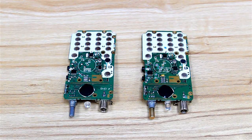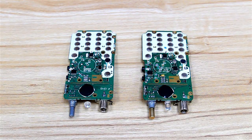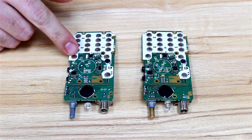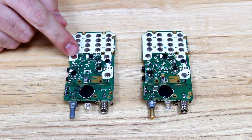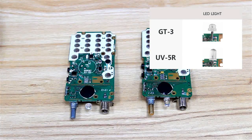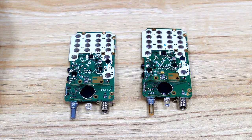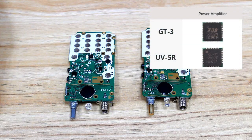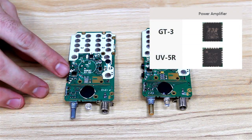Alright, so here we've taken them apart and we're looking at the different circuit boards. Now on this side we have the GT3, and over here we have the UV5R. As you can see with the lights, a little bit different on this one, it's more built-in. Now the first thing they've improved here is the power amplifier IC, as you can see marked by one here.